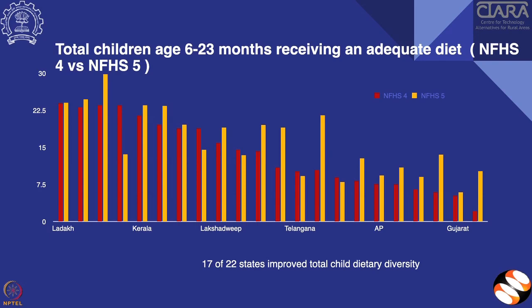In NFHS 5, 17 out of 22 states have improved total dietary diversity, but we can definitely do better. Most states have about 15 to 22 percent minimum adequate diet in children, and states like Andhra Pradesh and Gujarat still have very low minimum dietary diversity.